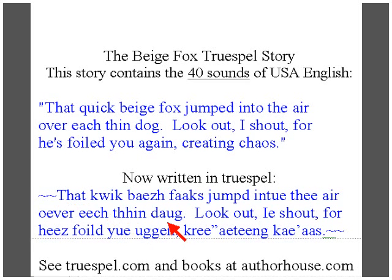Dog — AU is common to represent the 'aw' sound. Look — the double-O is the 'uh' sound, and that is the most common spelling versus double-O being used for the 'oo' sound, like 'food' or 'balloon' — that would have to be spelled with the OO. Out — by far OU spells the 'owl' sound.